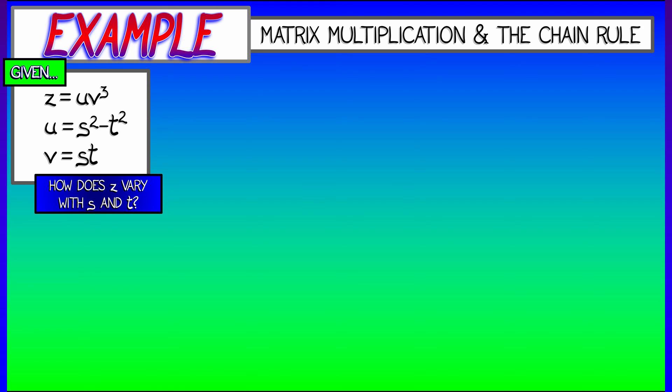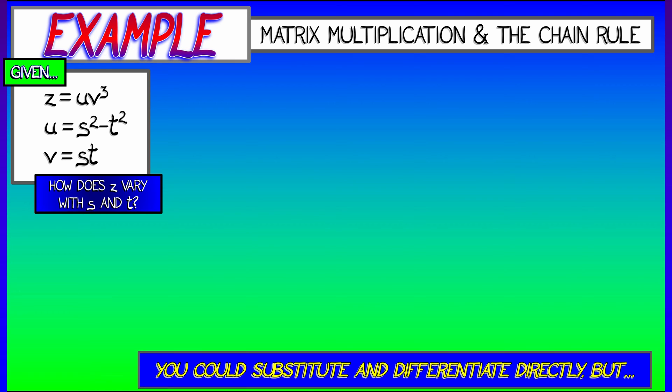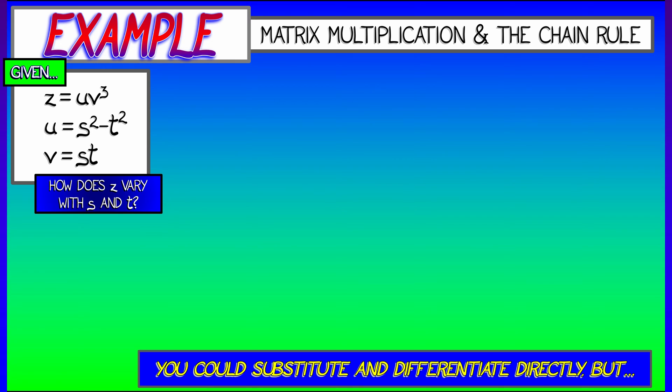If I want to know how does z vary with respect to s and t, what can I do? Well, I could just substitute in for u and v and then take partials with respect to s and t. But let's do this via matrices. Let's do this via the chain rule. And let's practice being careful.